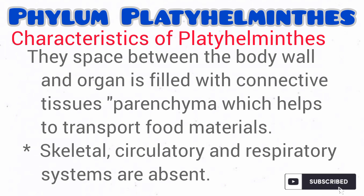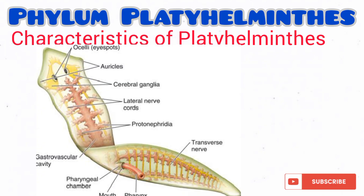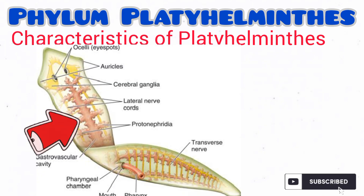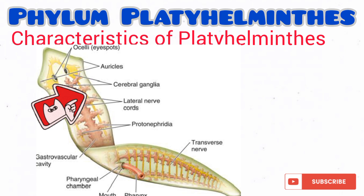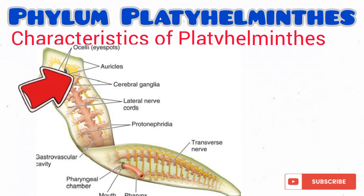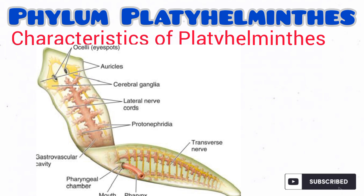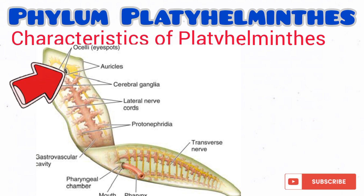They lack the system level of organization, and as such, skeletal, circulatory, and respiratory systems are actually absent. They use protonephridia for excretion. As you can see from the diagram, their simple nervous system comprises lateral nerves called cerebral ganglia. They also possess ocelli, or eyespots.